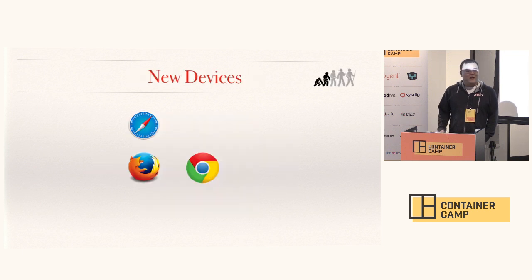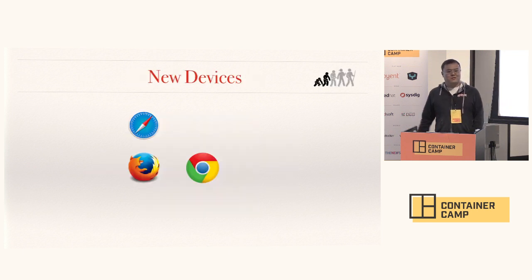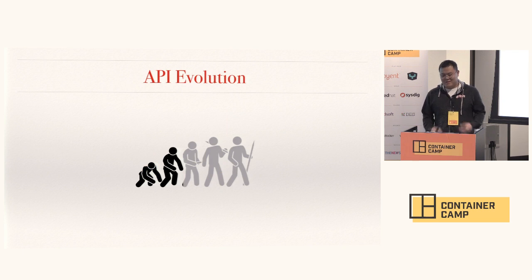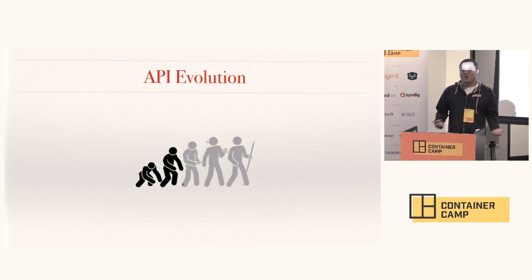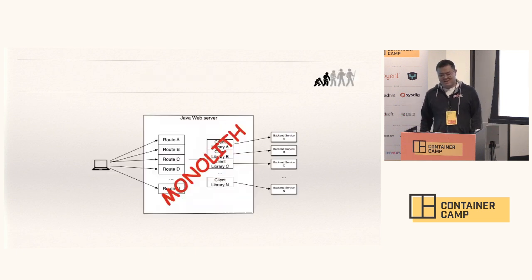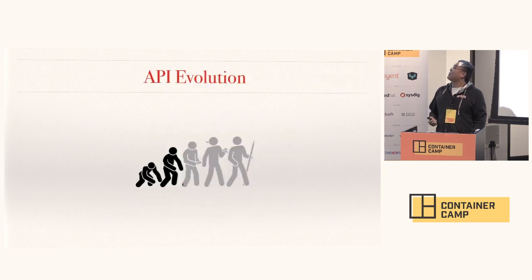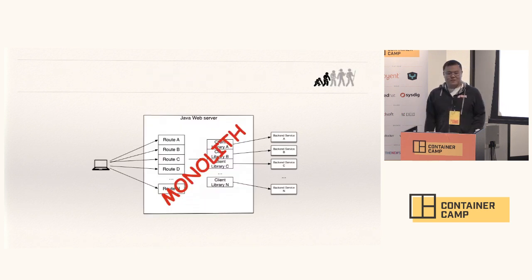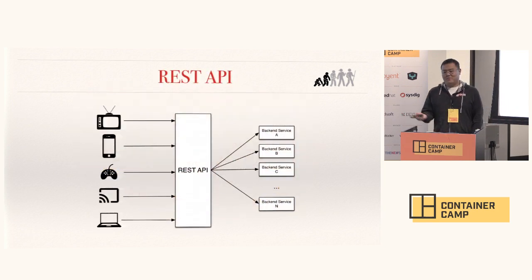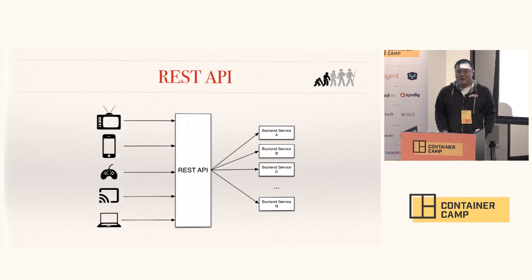At some point we realized that not everyone wants to watch on browsers — they want to watch on all of these devices too. And devices don't really talk to a web browser. So let's talk about the next step in our API evolution: how do we make it work for all of our devices? We quickly moved to a REST API. That's pretty standard. It unlocked the ability for us to support more devices than just the browser.